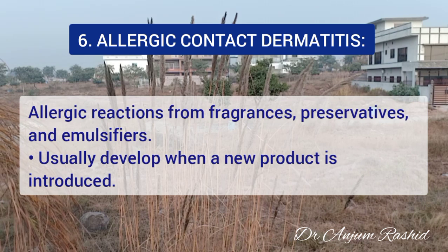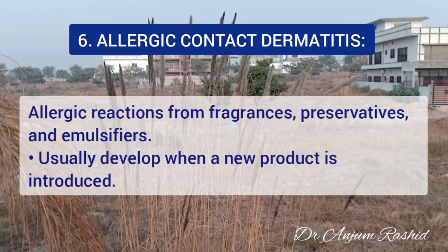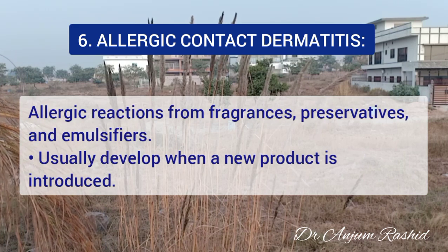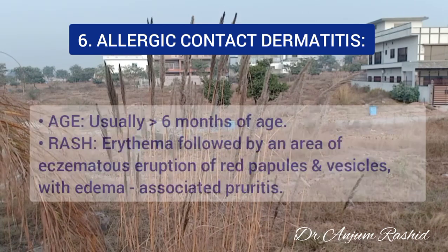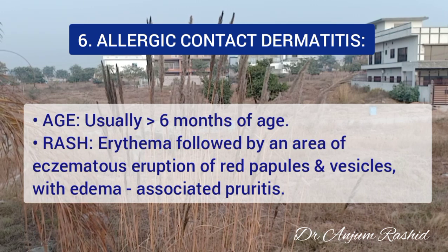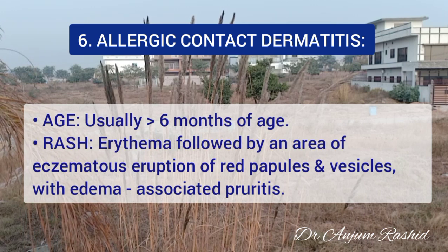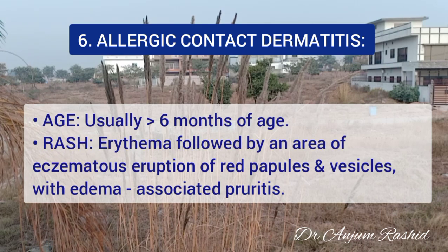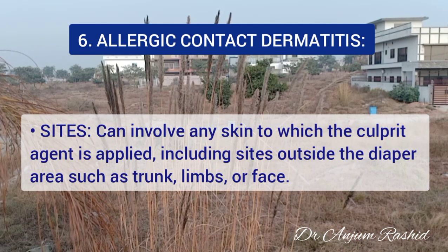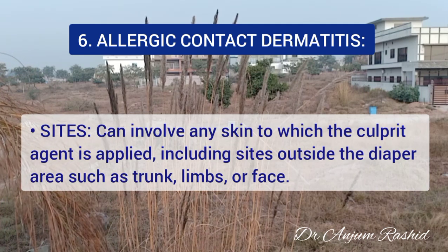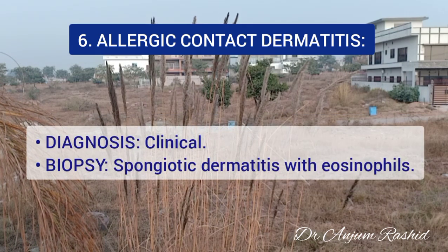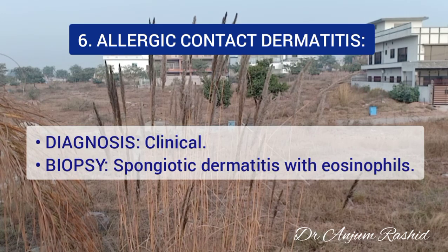Allergic contact dermatitis is also an important diaper area eruption. It is due to an allergic reaction from fragrances, preservatives, and emulsifiers, and usually develops when a new product is introduced. It usually affects infants more than 6 months of age. There is erythema followed by an eczematous eruption of red papules and vesicles associated with edema, with typical associated pruritus. It can involve any skin to which the culprit agent is applied, including sites outside the diaper area such as trunk, limbs, or face. Biopsy shows spongiotic dermatitis with eosinophils.